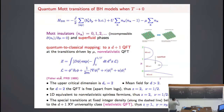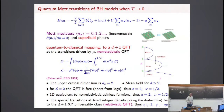This transition is in the XY universality class in d plus one dimensions, while the generic Mott transition is a non-relativistic quantum field theory with different exponents — a different theory. Just to give an example that z can be different from one: this means the scaling of the temperature and of the gap is different, and of course you cannot have a conformal field theory in the usual sense.